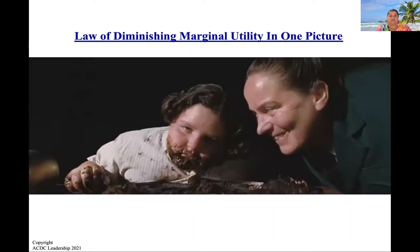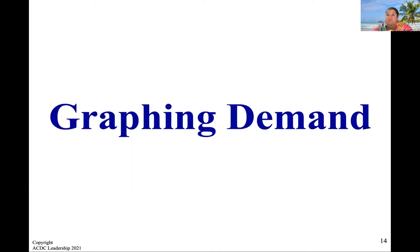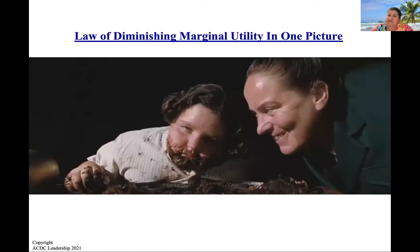Here's the perfect example of the law of diminishing marginal utility. You all saw the movie Matilda — you know when that giant chocolate cake came out. That first bite of cake is sweet, amazing deliciousness. The 10th bite of cake, it's still good. The 20th bite — I don't know, I think I'm getting full. And by the time you get to the 50th bite of that chocolate cake, you're probably ready to vomit. The satisfaction you got by adding each additional bite decreased.